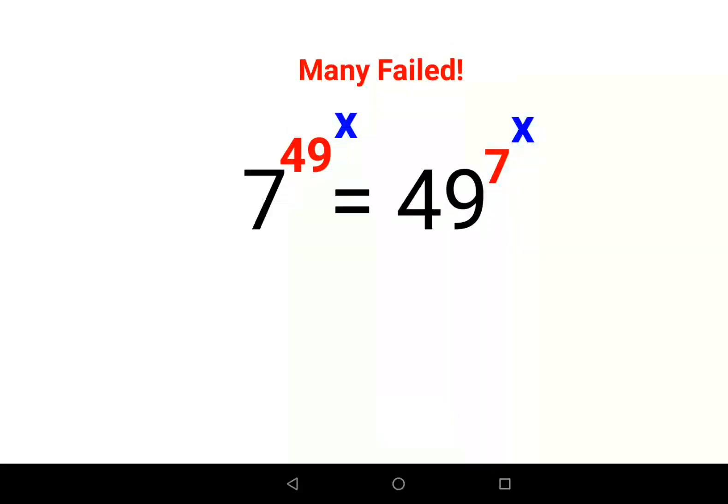Welcome everyone. Today we are going to solve a very nice indices problem. The question they have given us is 7 raised to 49 raised to x equals 49 raised to 7 raised to x, and obviously we need to find the value of x.